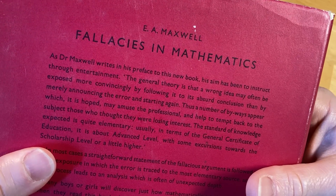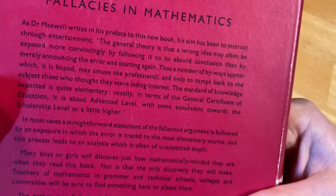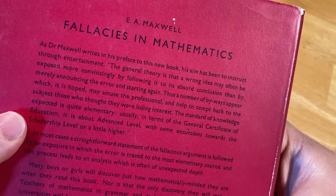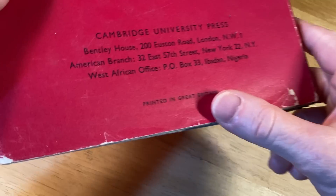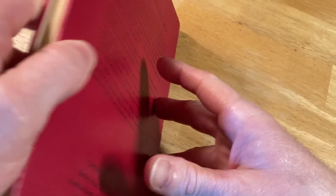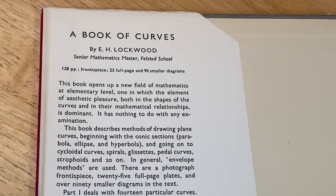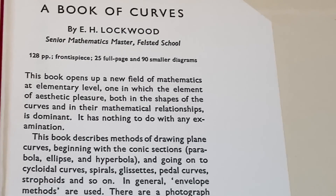Let's look at the back here. It talks about fallacies in mathematics in the back. And let's just see — printed in Great Britain. Let's open it up and read the inside of the dust jacket to see what it says about the text, to get a general overview of what to expect.